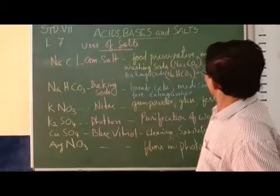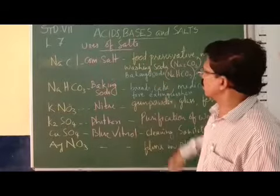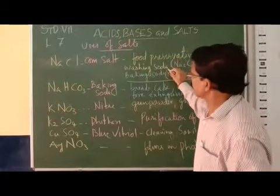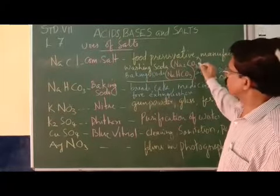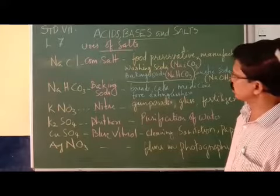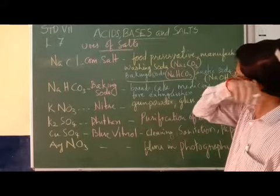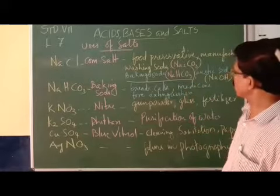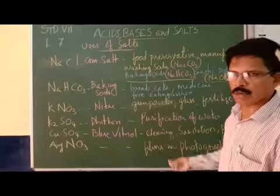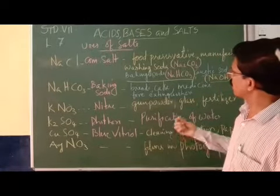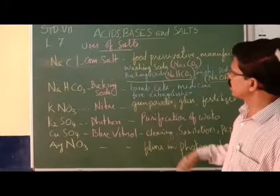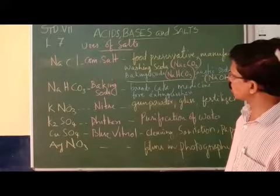Sodium chloride is also used in the manufacture of washing soda and baking soda. Washing soda is sodium carbonate — Na2CO3. Baking soda is sodium bicarbonate — NaHCO3. Also, caustic soda is sodium hydroxide — NaOH. So: washing soda equals sodium carbonate, baking soda equals sodium bicarbonate, and caustic soda equals sodium hydroxide.